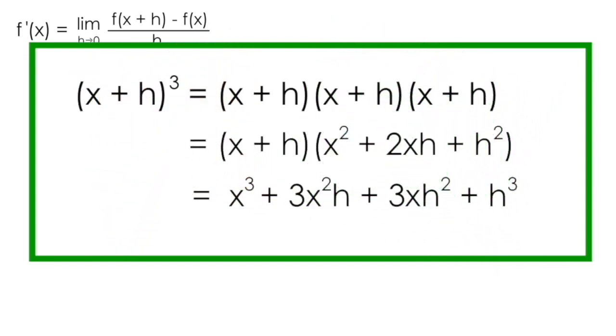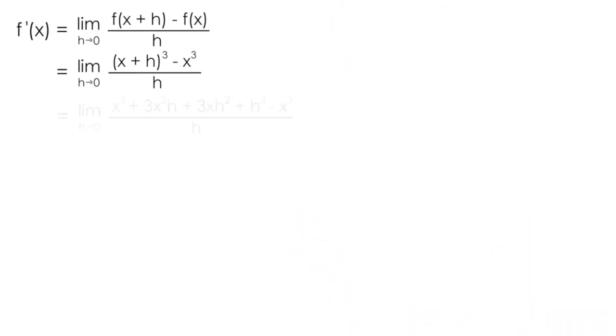So with our result of x³ + 3x²h + 3xh² + h³, I can take that result and place it into our definition in place of (x + h)³, as shown here in green. You'll remember that I'm subtracting the original function of x³. Notice that the two x³ terms cancel. This is something that should happen every time you use the first principles definition.